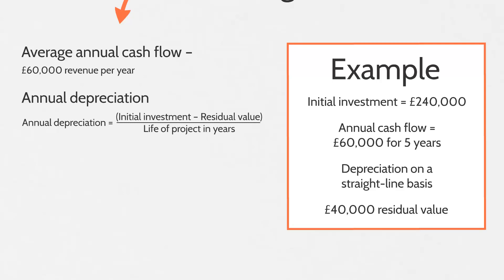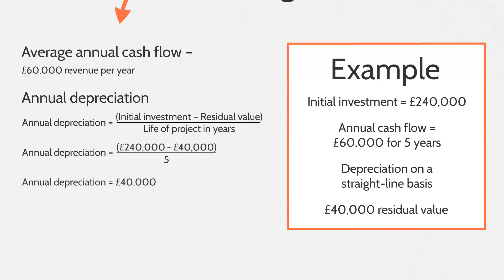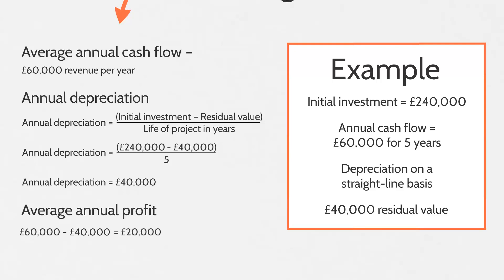We can calculate the annual depreciation by deducting the residual value from the initial investment and dividing it by the life of the project in years. So we have £240,000 minus £40,000 in residual value, giving us £200,000, which we divide by 5 — the length of the project — giving us an annual depreciation charge of £40,000. That works out because it's straight-line depreciation, so it's the same amount each year.